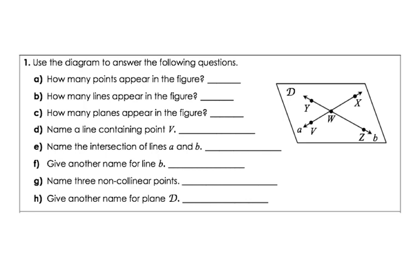Let's start with number one on your notes. Use the diagram to answer the following questions. I'm going to do A, C, E, and G, and then I'll give you the rest — B, D, F, and H — to do on your own. So at this time I'd like you to listen and copy. How many points appear in our figure? We have Y, X, W, V, Z — so that would be 1, 2, 3, 4, 5.